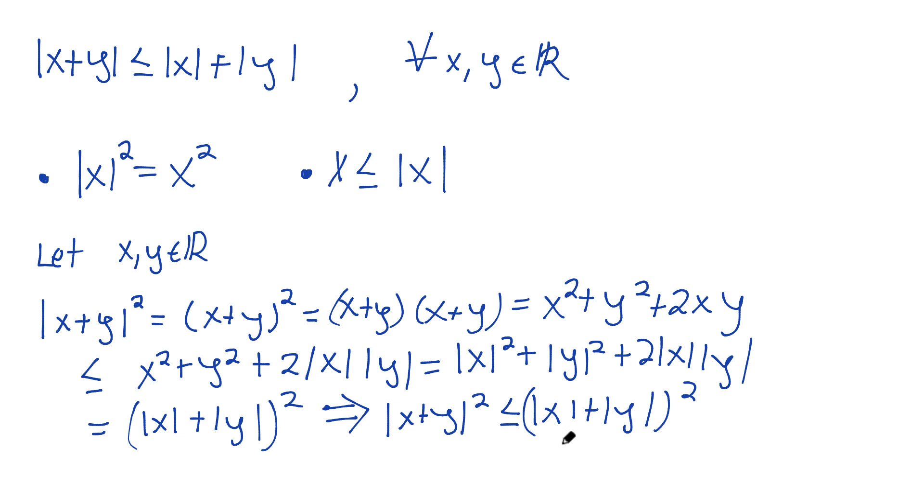And if these are both squared, we'll just take the square root of both sides, or just remove the squared, and then we exactly have it. We have |x + y| is less than or equal to |x| + |y| for any x and y in the real numbers.